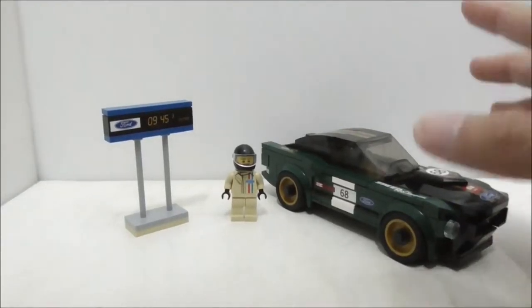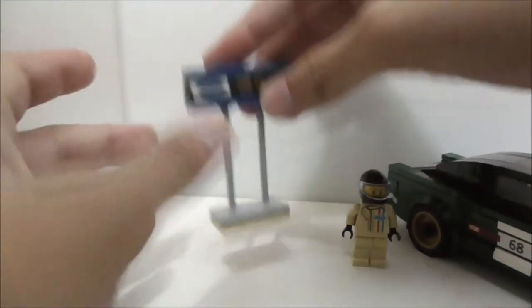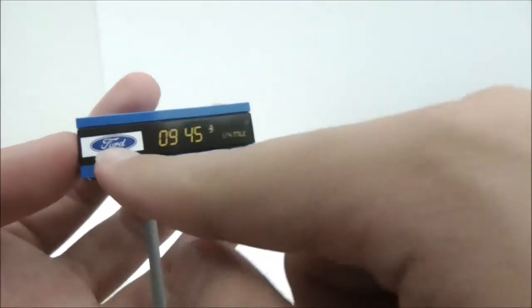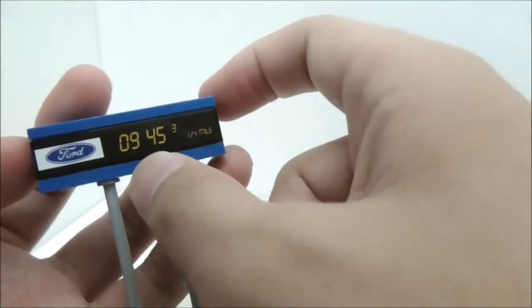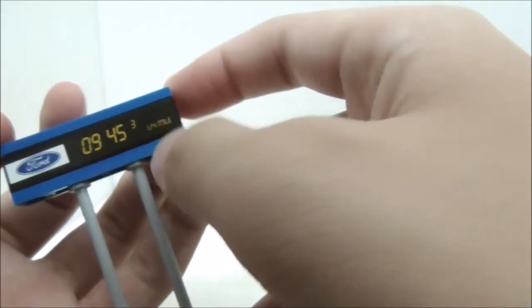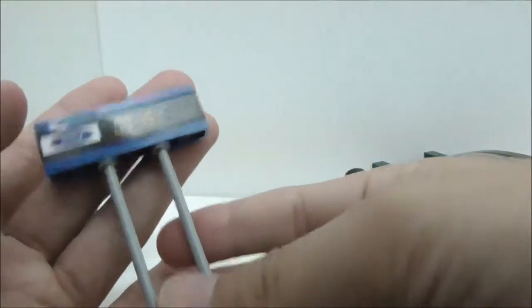So these are the two builds included in the set here. So let's start with the timing board. For the timing board, it's a very simple build. It has a stand. And yeah, for the board itself, this is a sticker. You have these blue stripes, you have the Ford logo, you have the minute and the second and also the microsecond, and you have the distance which is a quarter mile. And yeah, aside from that, nothing else too interesting to the timing board.